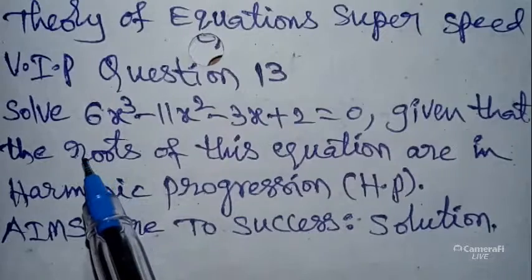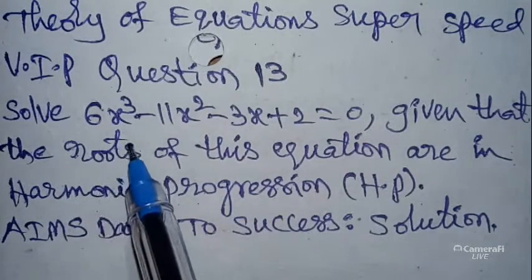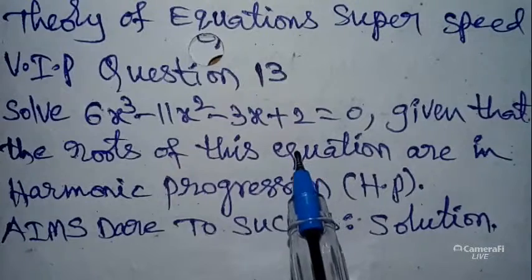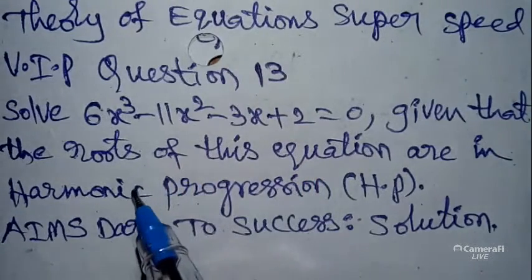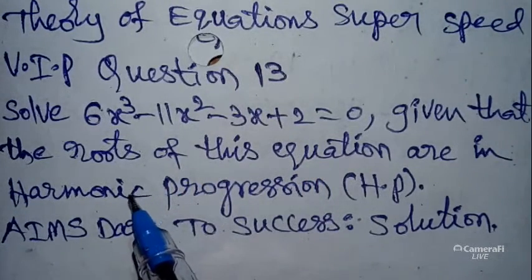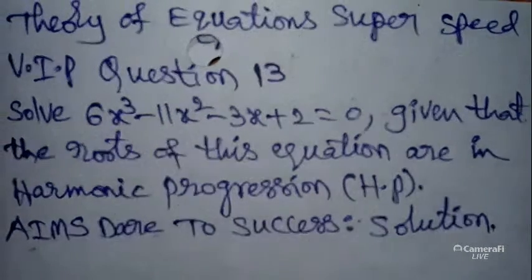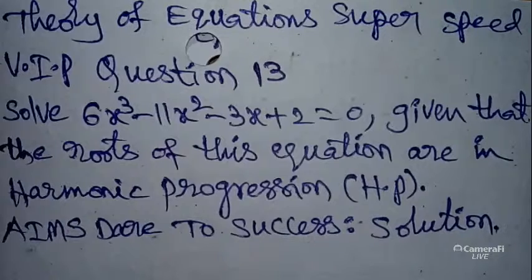Today our question is: solve 6x³ minus 11x² minus 3x plus 2 equals 0, given that the roots of this equation are in Harmonic Progression (HP). This concept is from Arithmetic Progression — the opposite relationship.